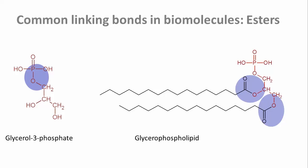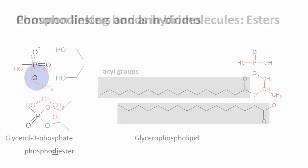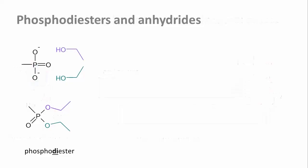As functional groups, these residues in black are called acyl groups, as you remember. Phosphoric acid can form ester bonds with two different hydroxyl groups and so link them to a diester. One of the most famous examples is the linkage between two sugars in DNA or RNA.